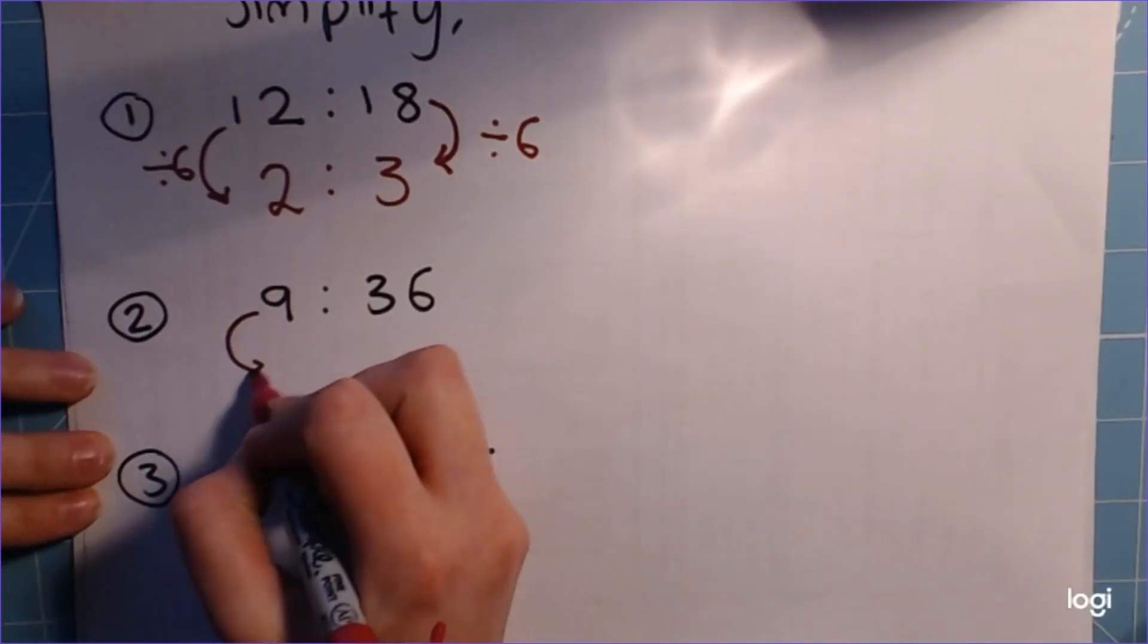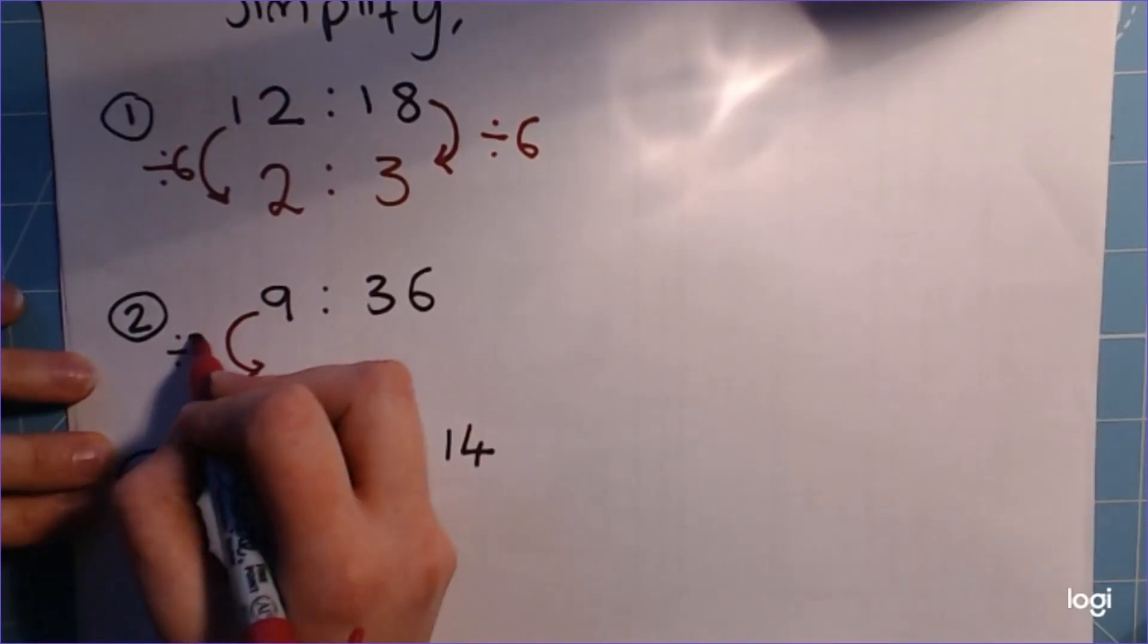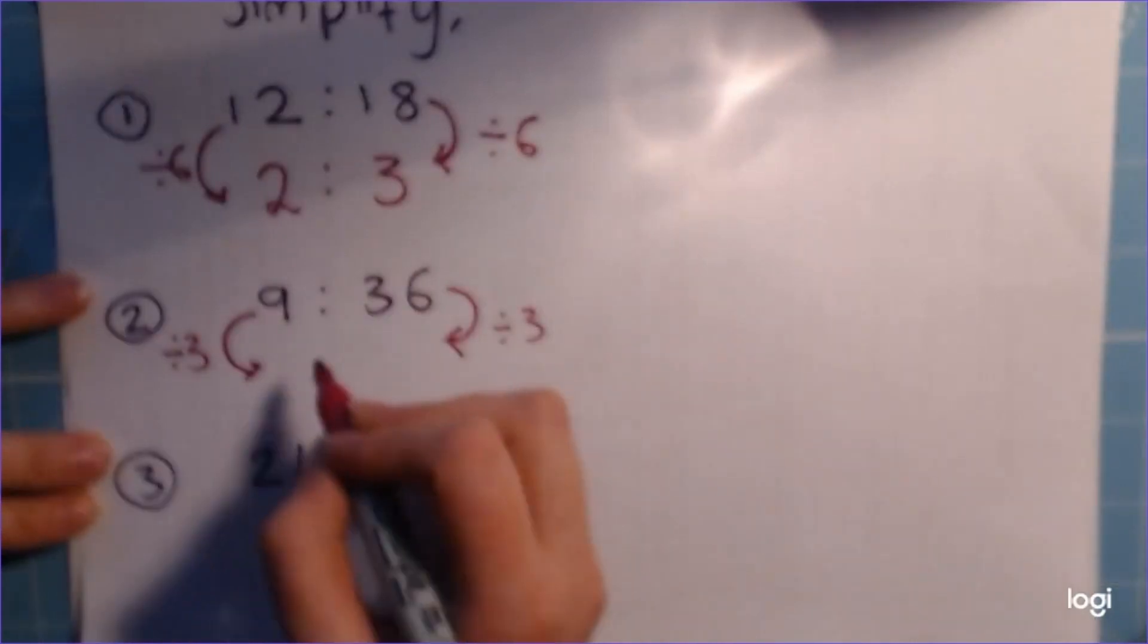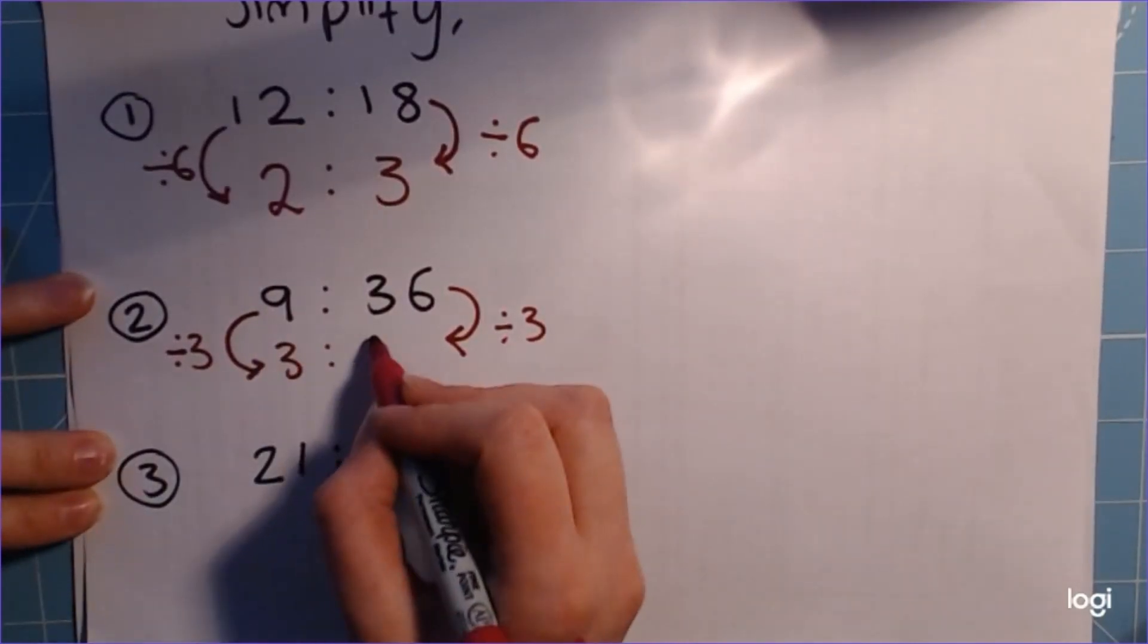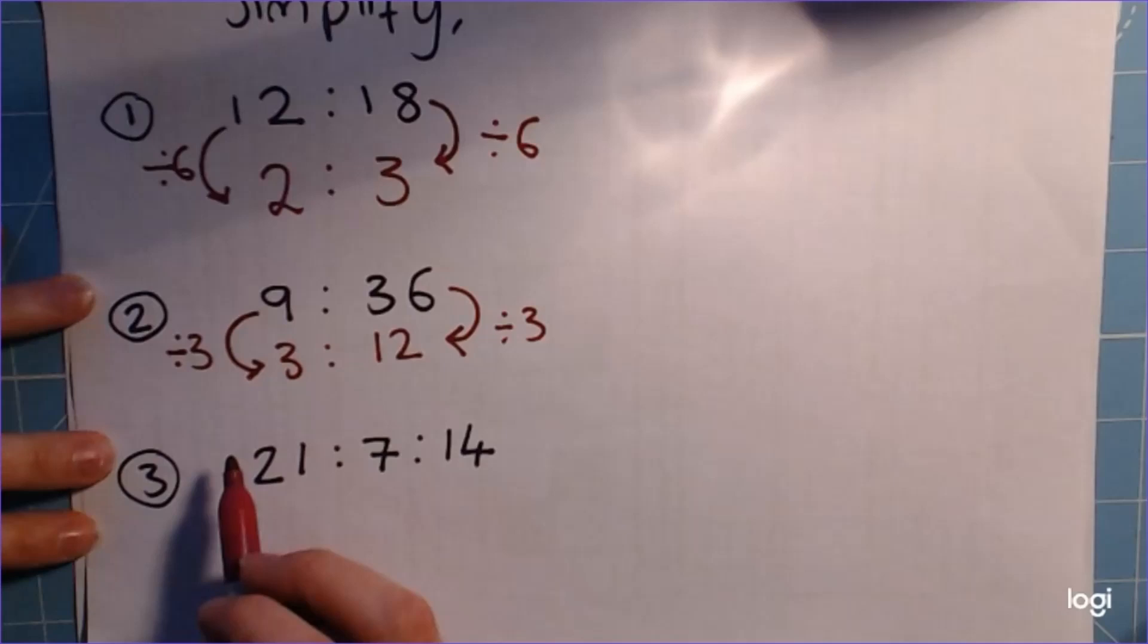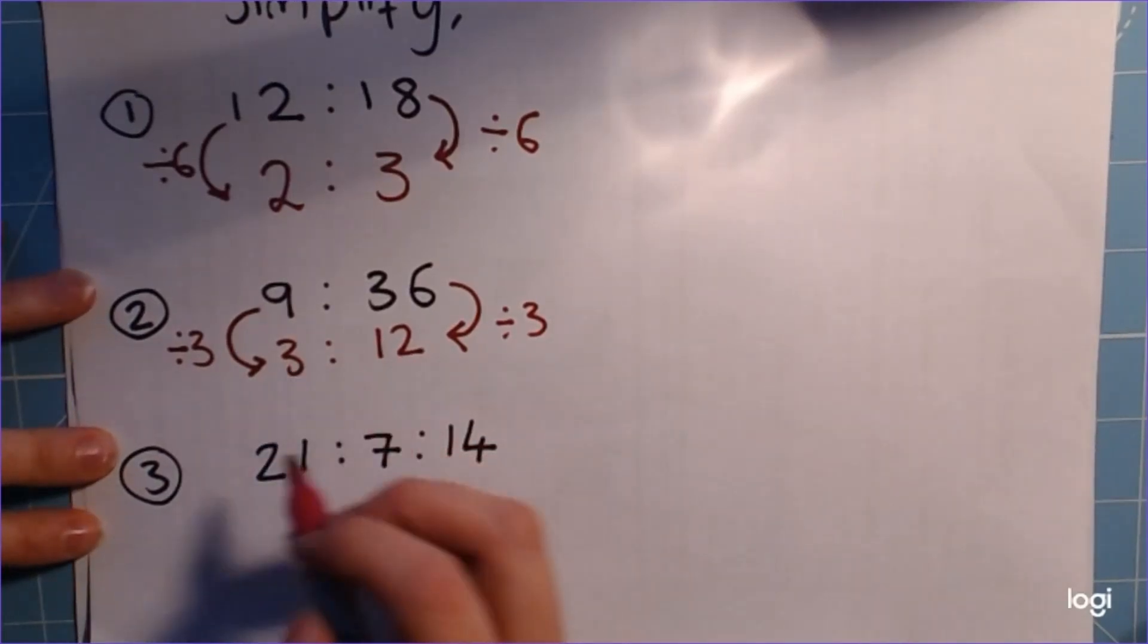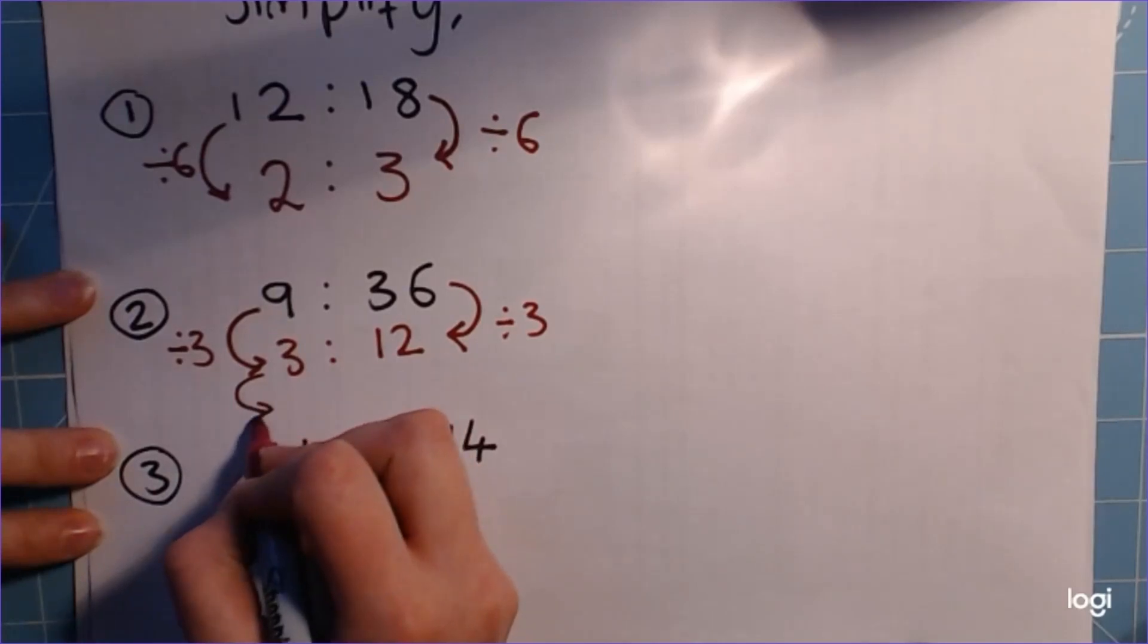So if we divide both sides by 3, we get 3 to 12, but then you need to make sure you carry on going because actually there's another common factor here of 3. So we can take a second step here.